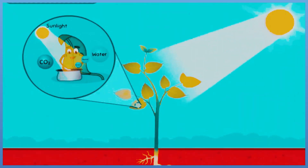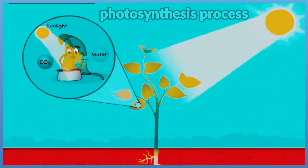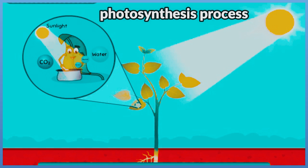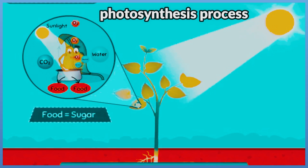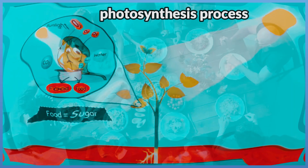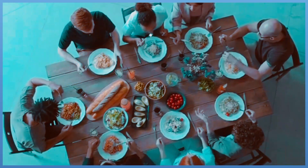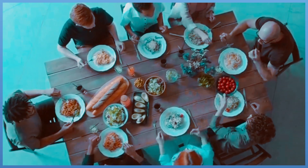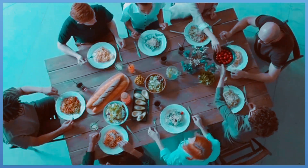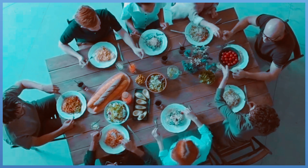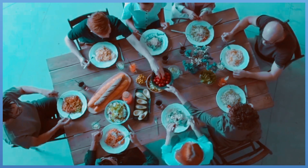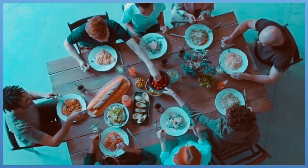Plants can manufacture their own energy in the form of glucose through the photosynthesis process. Humans must eat food throughout the day to get energy; as they chew and swallow the food, nutrients are absorbed into the blood.